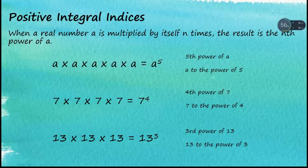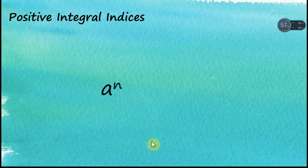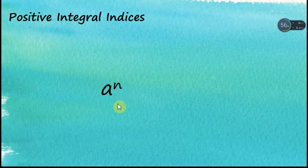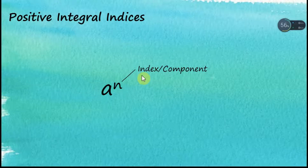We call this 13 to the power of three. For index numbers, we write a number with a superscript of another number. The superscript is called the index or the exponent, and the main number is called the base.